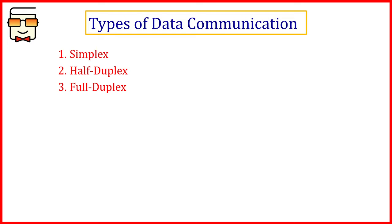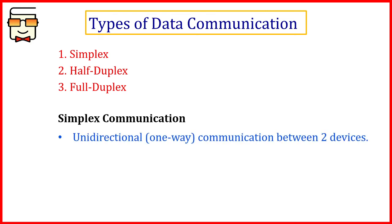Let us see what the three types are and how they differ from each other. Starting with simplex communication — it is the simplest form. In simplex communication, you have a sender, say A, and a receiver, say B, with a communication link. The data is sent from A to B, and simplex communication means data or message will be sent only in one direction — it is a unidirectional, one-way communication.